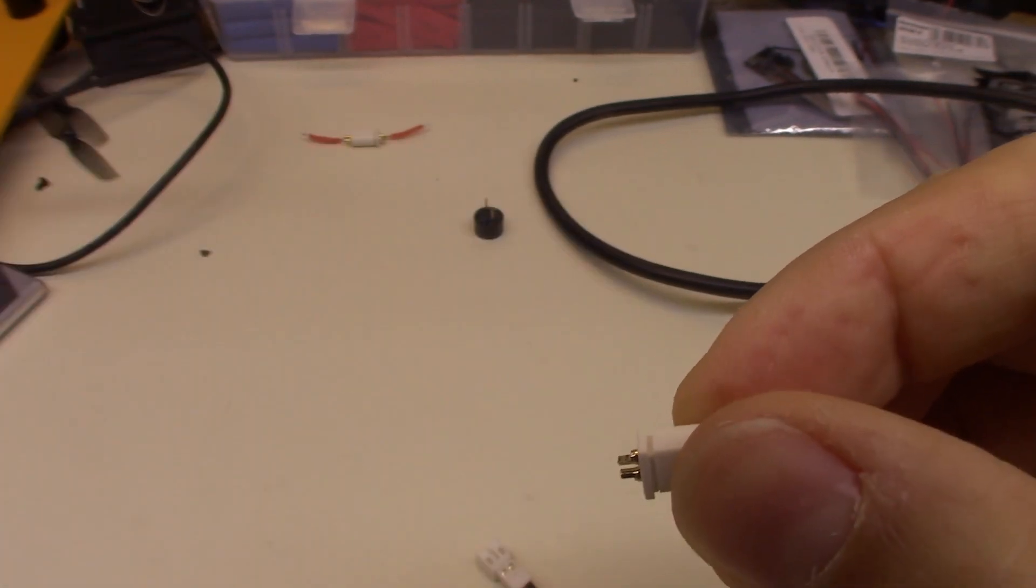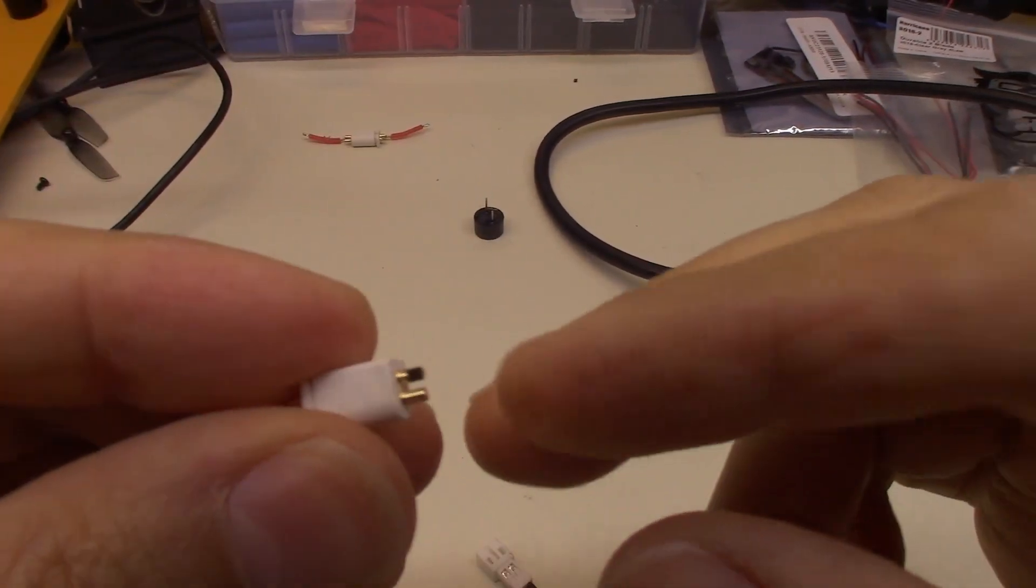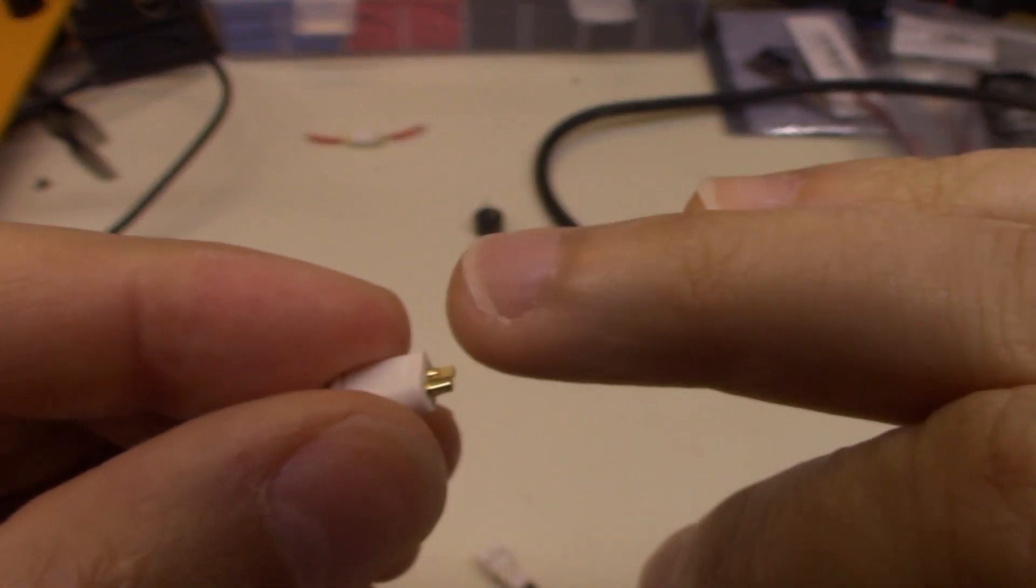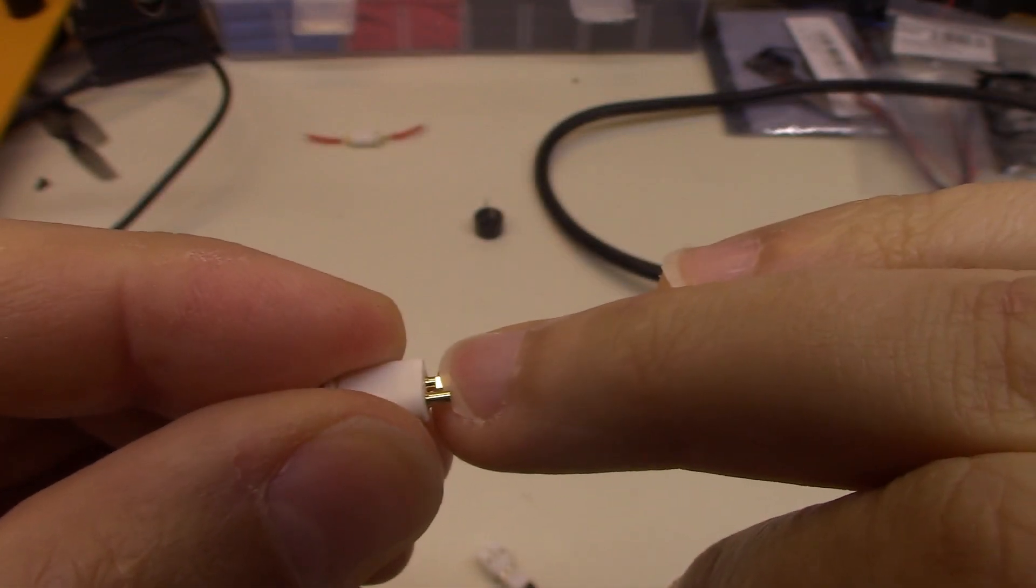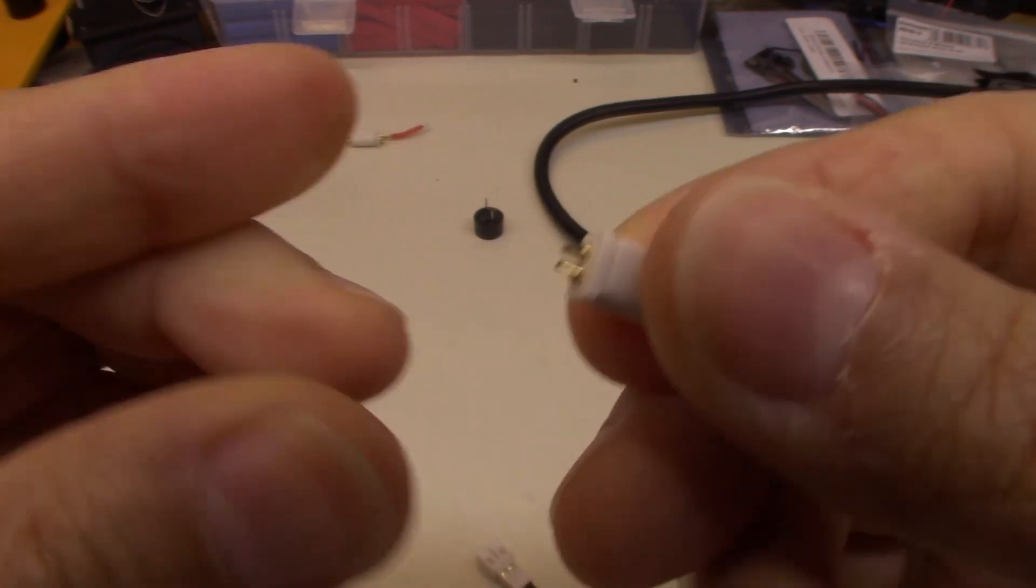One thing I noticed is that in this bag, there are no pieces of heat shrink that you would normally get, like if you bought some XT-30, so you'll have to provide your own heat shrink when you solder onto these. It should be pretty easy to solder onto. You just add a little bit of solder onto there, add a little solder onto your wire, and then touch them together, put your heat shrink on, and you're done.